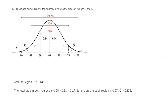With the same argument, we can define the areas between one and two standard deviations. We know 95% is within two standard deviations and 68% is within one. Subtracting gives 27% remaining, which is divided into two pieces — one on each side — giving 13.5% each. So those regions each have 13.5% of the area.